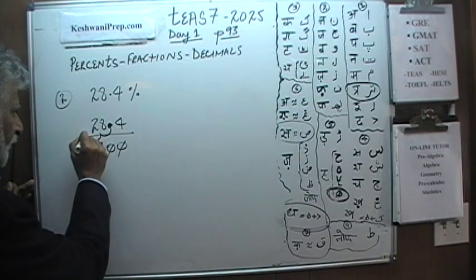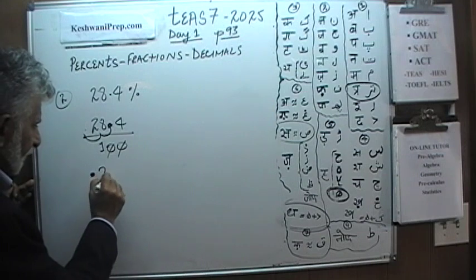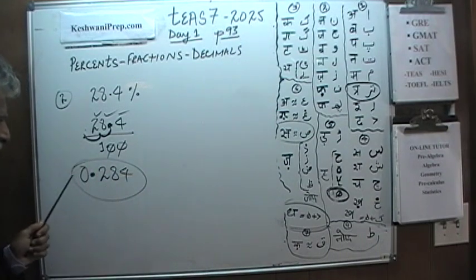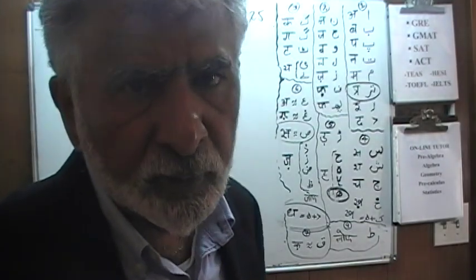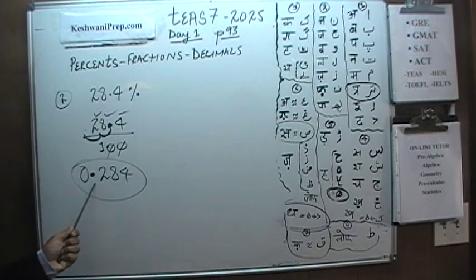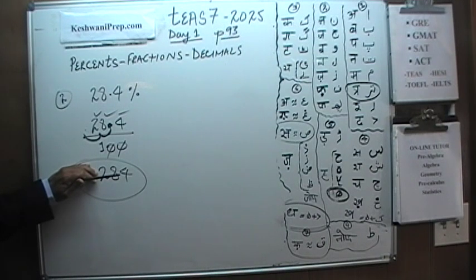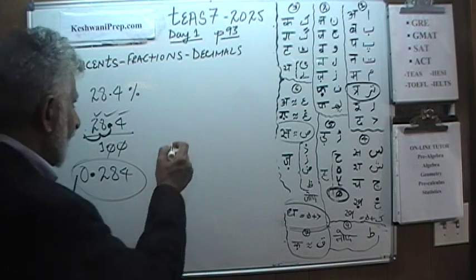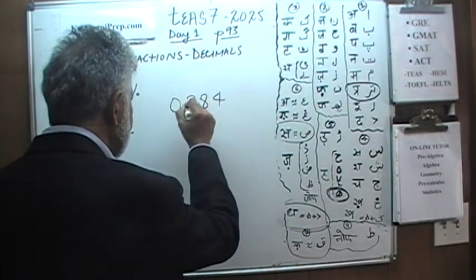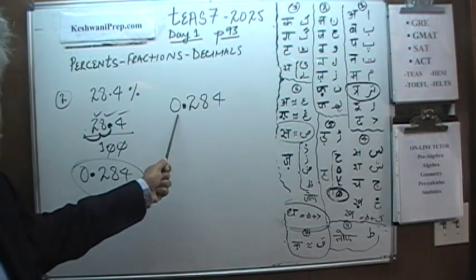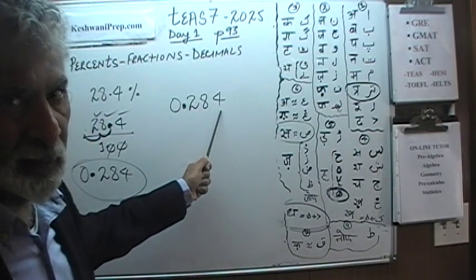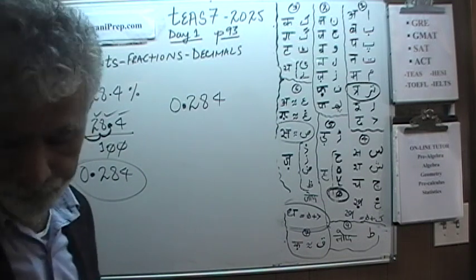We pick up our decimal and move it two places: one and two. It ends up in front of 2, giving us 0.284. We put a leading zero — the leading zero is put there for one purpose only: so the reader does not miss that there is a decimal here, so you don't accidentally read it as 284. It is 0.284. Note that this quantity is read digit by digit: zero point two eight four.